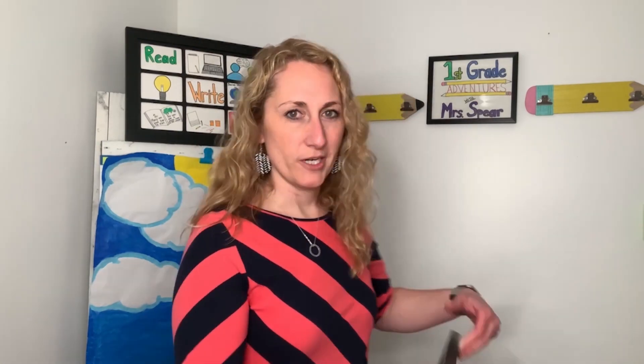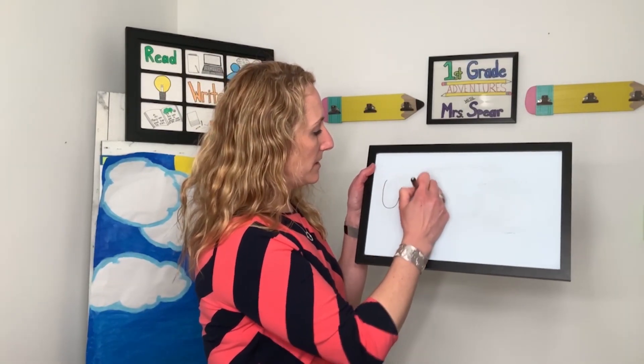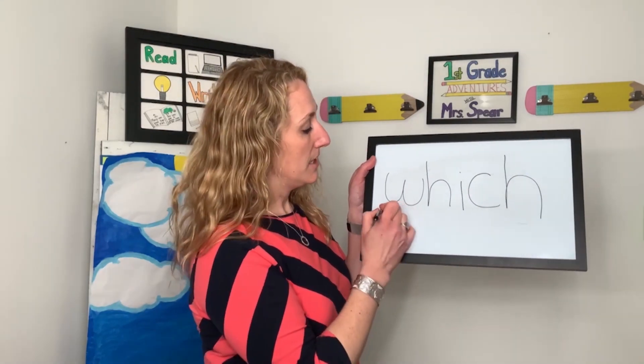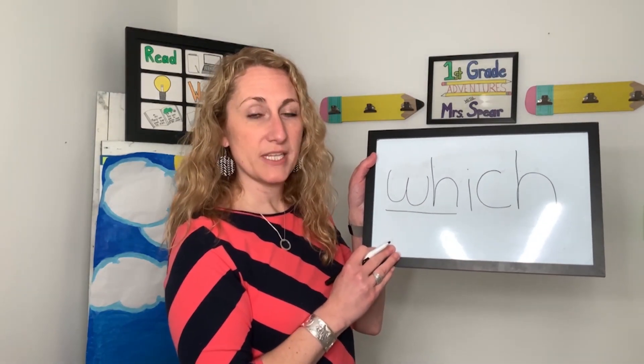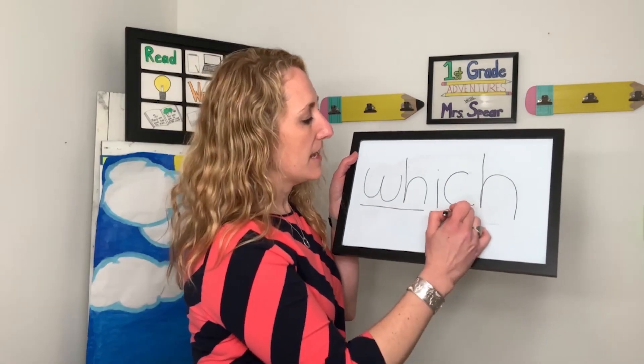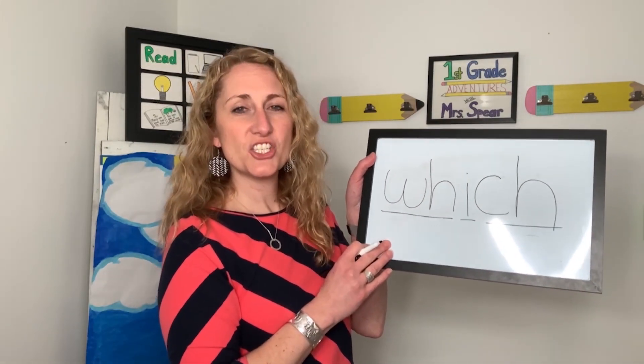The next word is which. What word? Great. Which. Here's the sounds I hear in which: w-ee-ch. Which. Three sounds. Which actually has five letters. W-h-i-c-h spells which. The w and h work together to represent the w sound. The i represents the i sound, and the c and h together represent the ch sound.